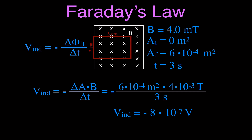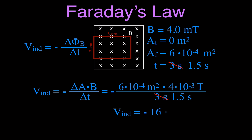Now we're going to look at changing the time, using the same example. Instead of taking 3 seconds, I move the coil in twice as fast — in half the time — which would be 1.5 seconds. Taking the same equation, I just change the time from 3 seconds to 1.5 seconds. Dividing by a number that's half as big gives a higher voltage. The induced voltage in this case would be minus 16 times 10 to the minus 7 volts. If you increase the time you get a lower voltage; if you decrease the time you get a greater induced voltage.